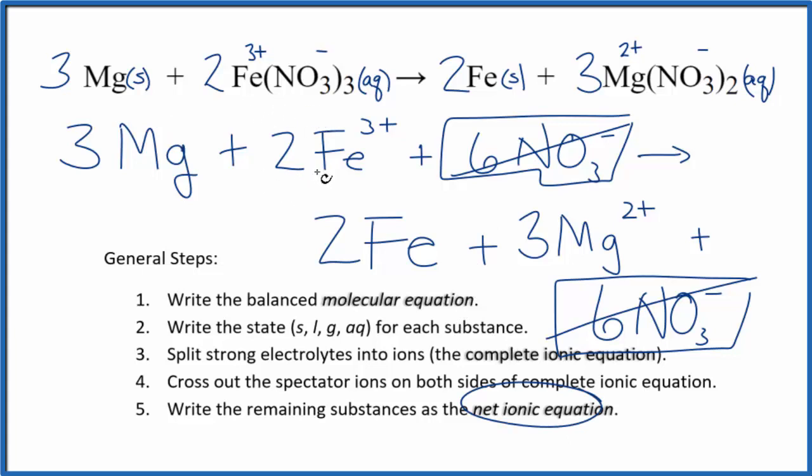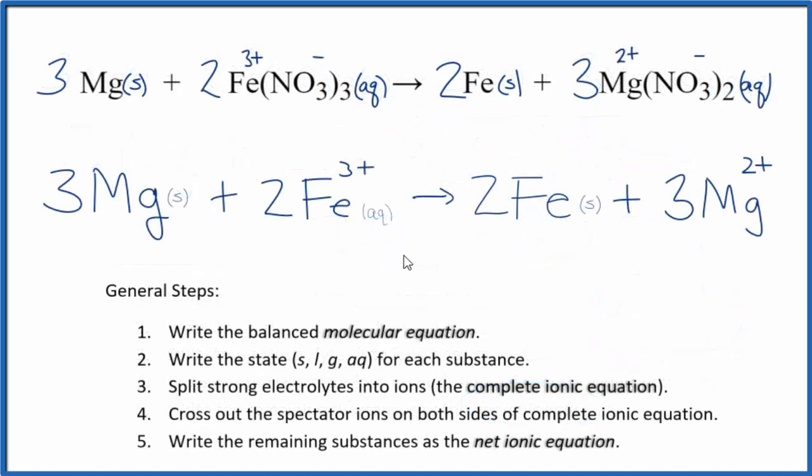I'll clean this up and write the states in, we have our net ionic equation. So this is the balanced net ionic equation for Mg plus iron 3 nitrate. You'll notice charge is conserved at 2 times 3 plus, so I have a 6 plus on this side. Over here in the products, 3 times 2, that's 6 plus. So charge is the same on both sides.